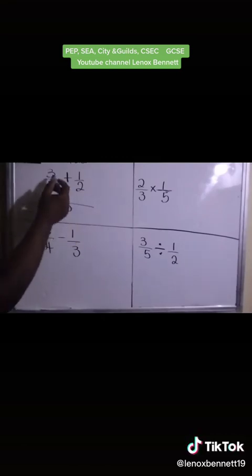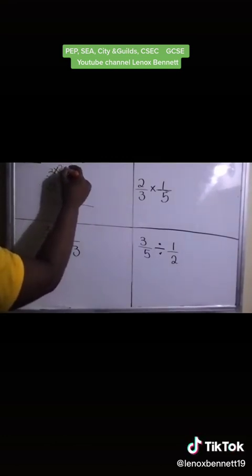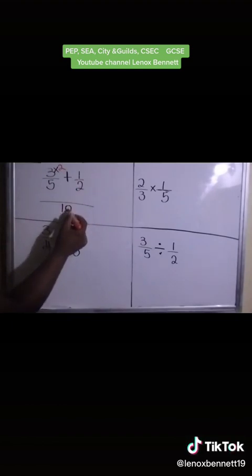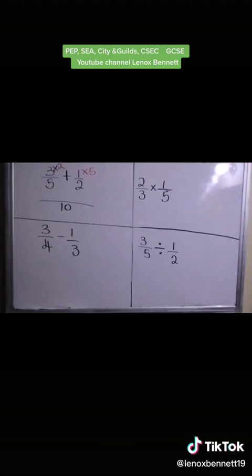So 5 into 10, that goes 2 times. So we multiply by 2. I'll do the same thing for this. 2 into 10, that goes 5 times. So we multiply by 5. To simplify.